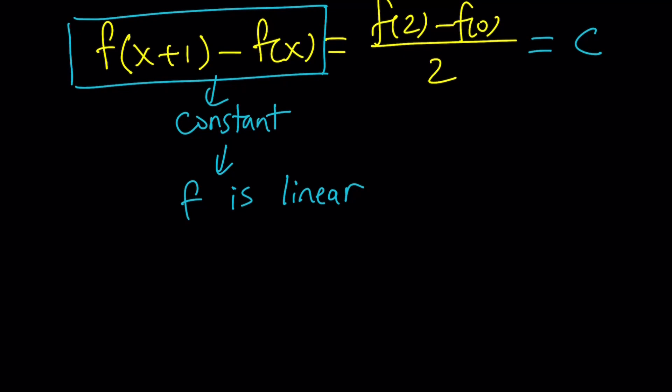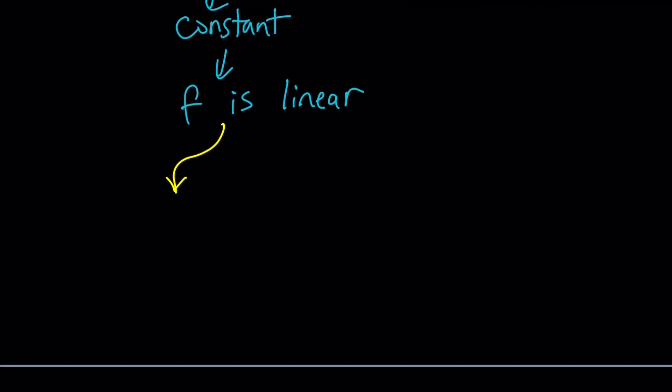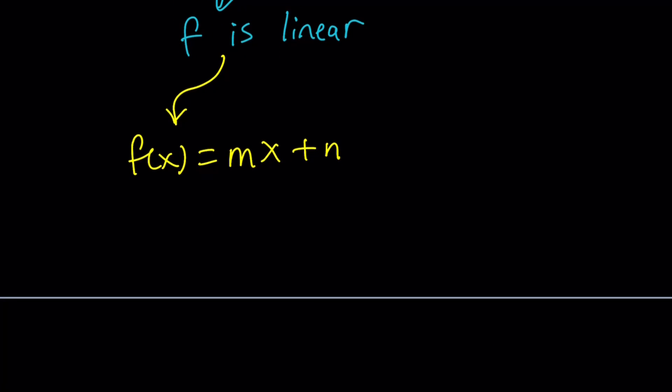So since f is linear—I'm not going to get into the proof, but we could do it in another problem—we can replace f of x with something like mx plus n. I'm trying to avoid a and b because we use them in the original equation. So now, since f is linear, we can write it that way. And now we're going to go ahead and substitute into the original equation. Let me remind you what that was: f of f of a plus b equals f of 2a plus 2f of b.